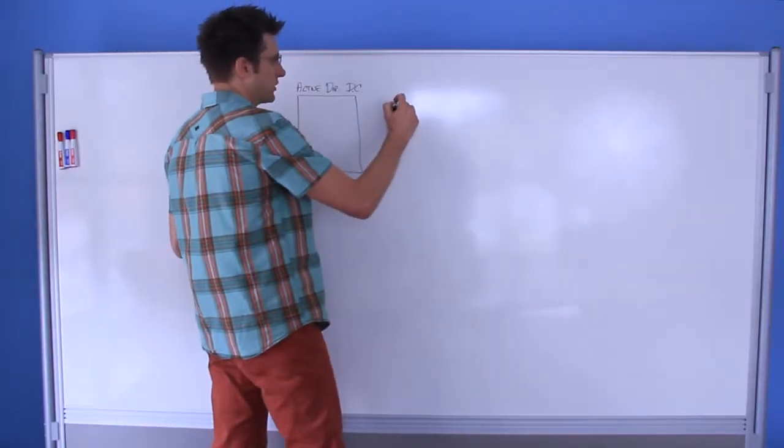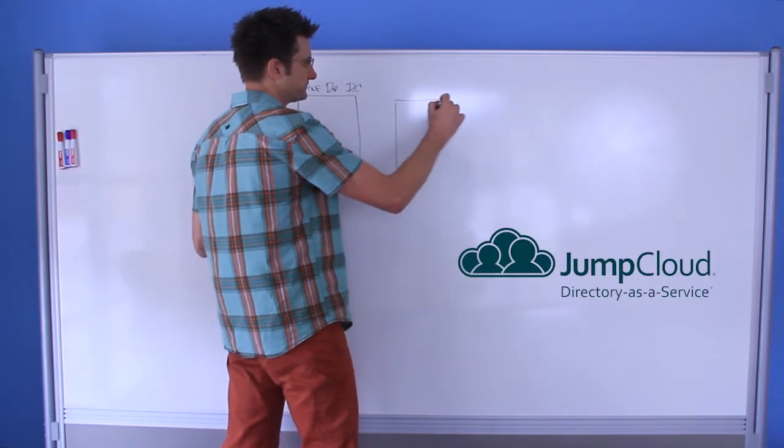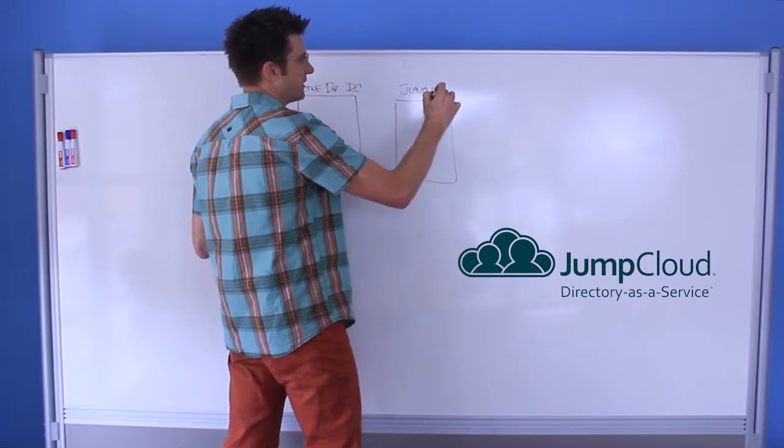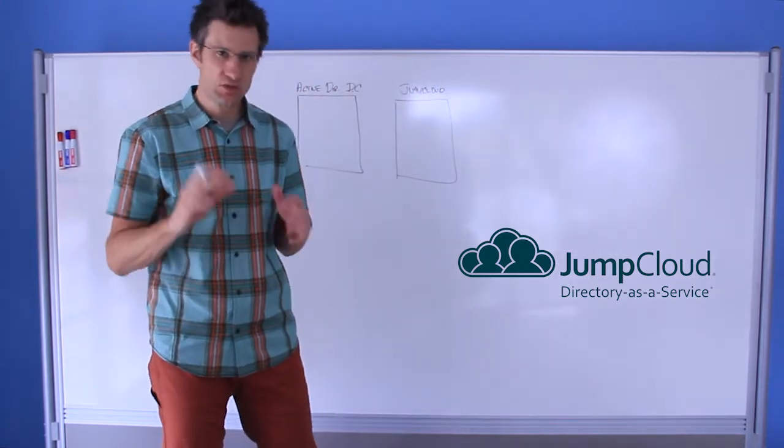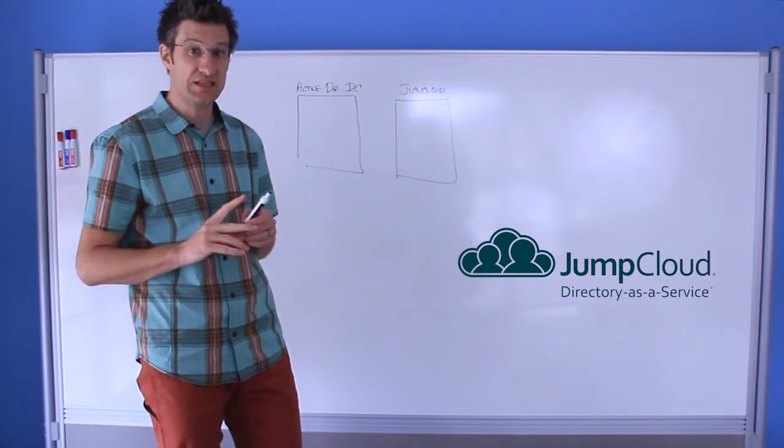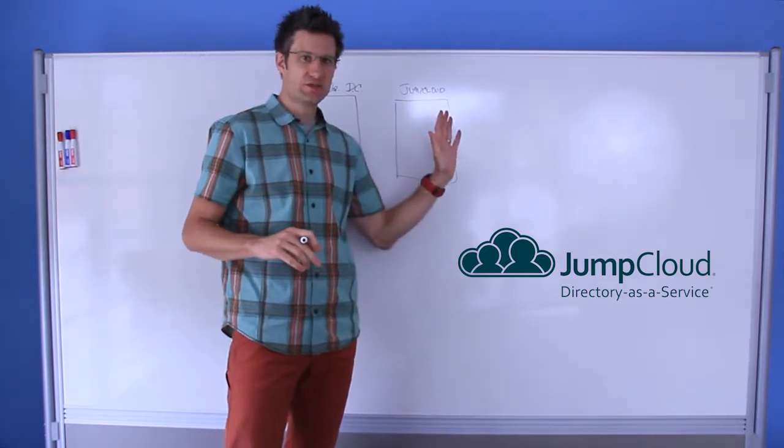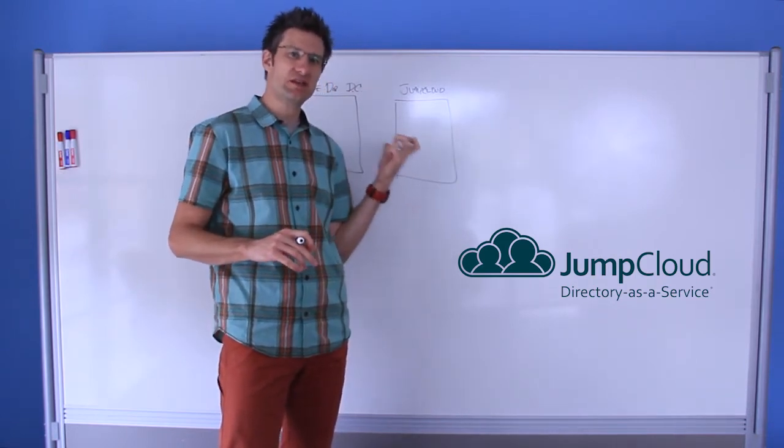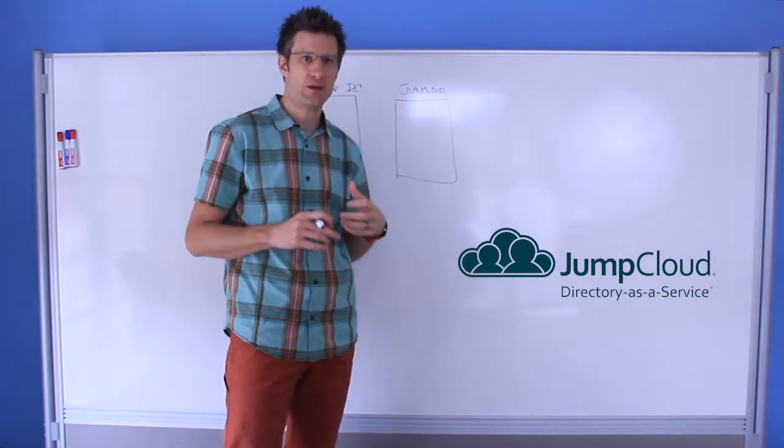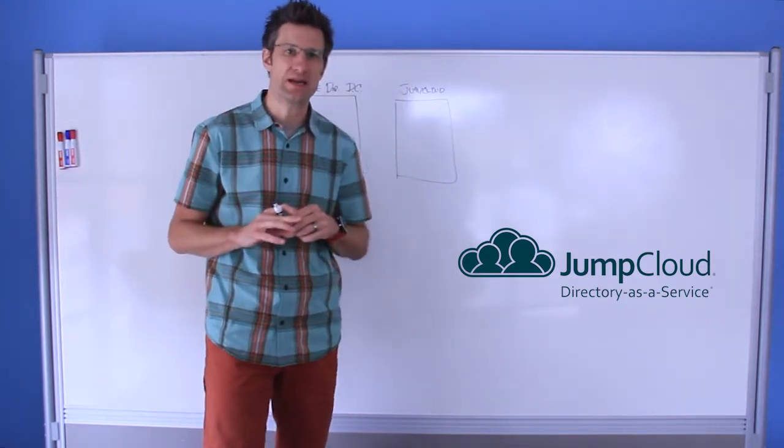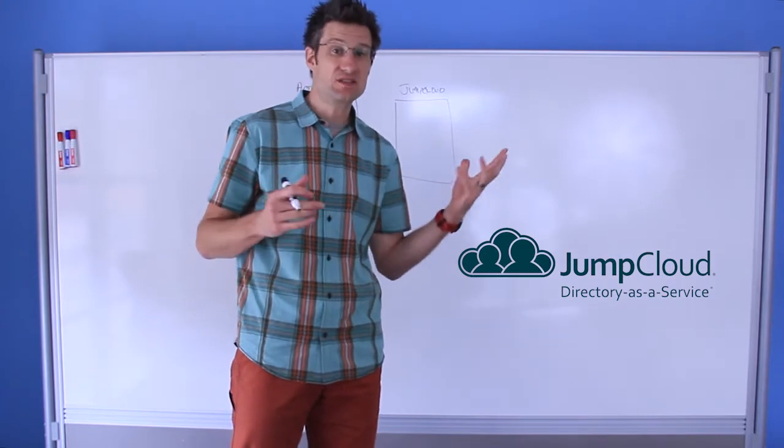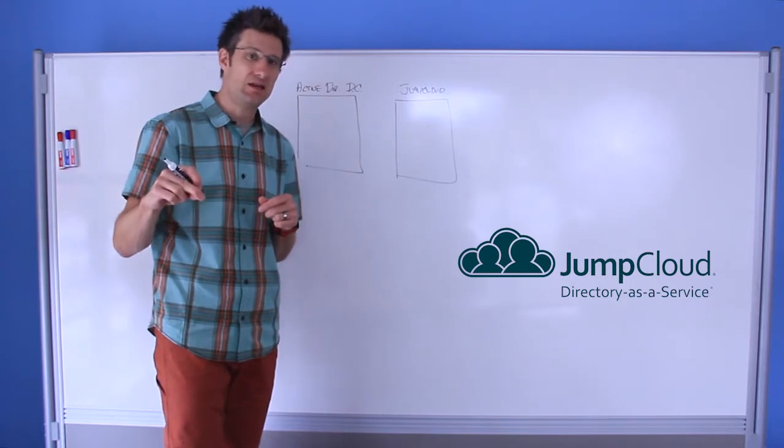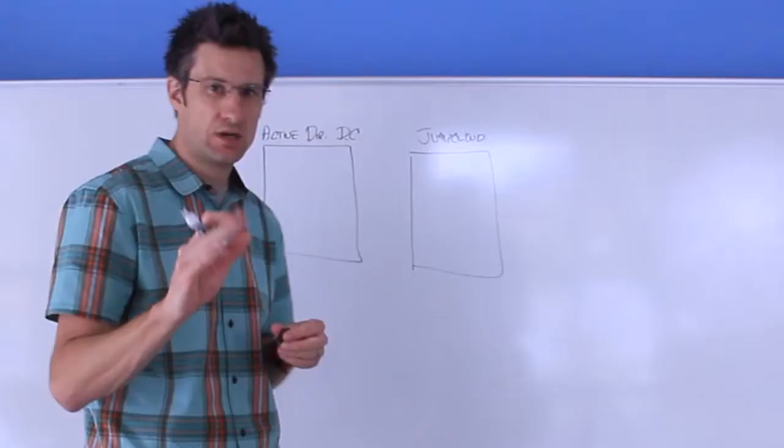So the next box, of course, is JumpCloud. And this box really is our cloud-based directory services. I'm going to pause before drawing the other boxes because I want to focus on the integration first and then we'll start talking about how these identities get propagated out to all the cloud-based and frankly even some on-premise resources that you still need using identities to authenticate, but they're not directly bound to AD.